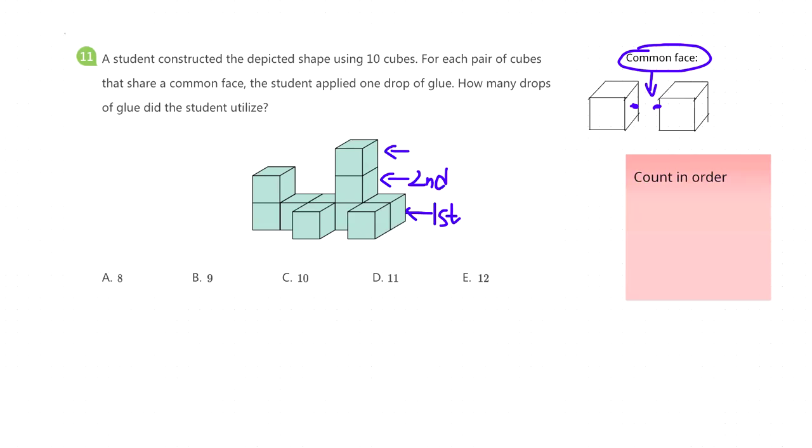So the next step is to count one by one. How many common faces can we find from the first layer? We have one, two, three, four, five, six. So we write down number six.